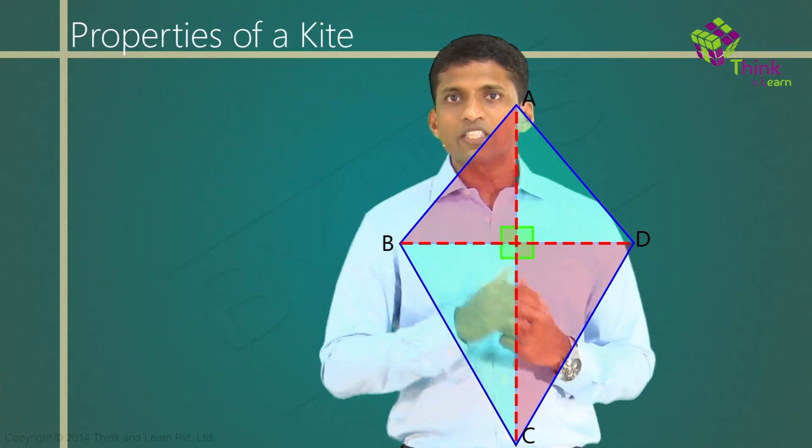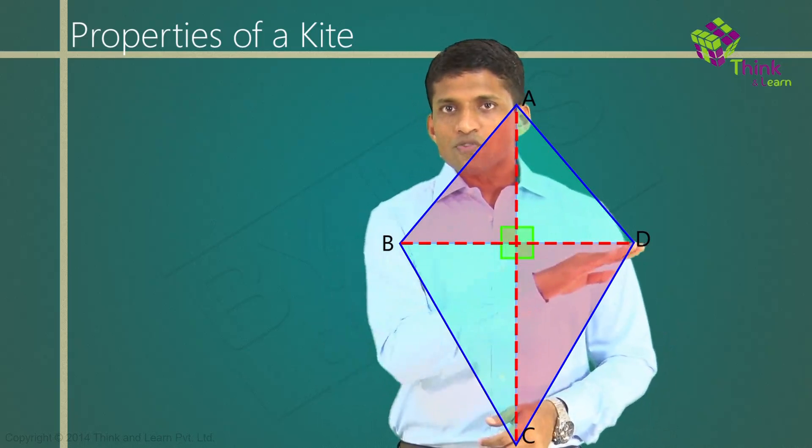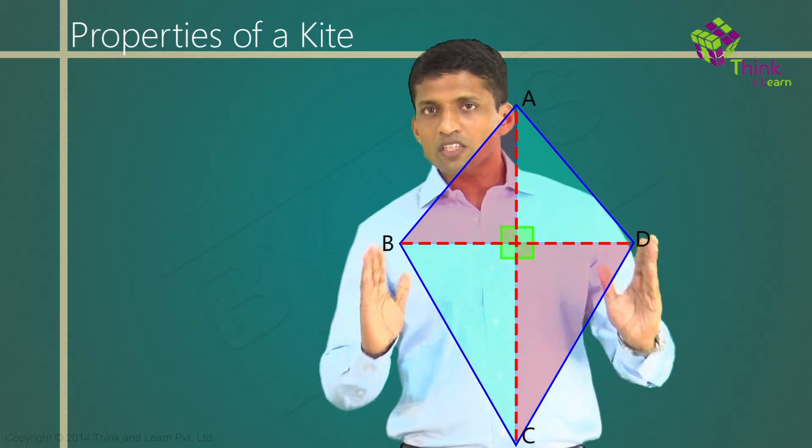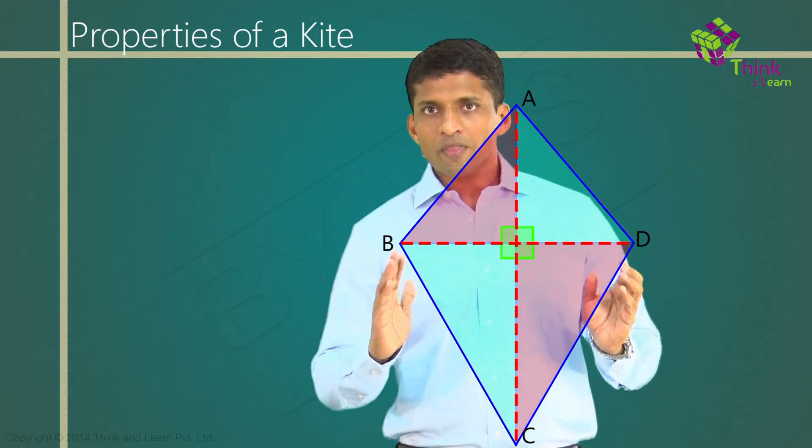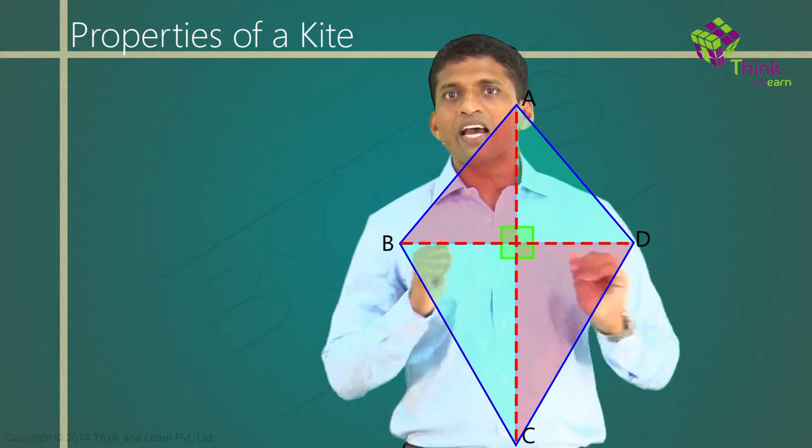You will also understand that one of the diagonals will bisect the other one. And if you use the same kite and fold and check the angles, you will see that angle B and angle D are equal.